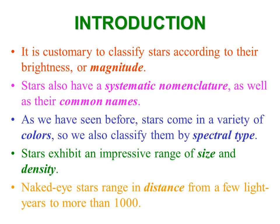Stars range in distance from just a few light years — like the closest star, Alpha Centauri, which is about four light years away — to more than a thousand light years away. Those are the naked eye stars. Alpha Centauri is one of the brightest stars in the sky because it's so close, but we can't see it from Memphis or most of the continental United States. It's actually a star pretty much sun-like, and therefore not intrinsically one of the most luminous stars.